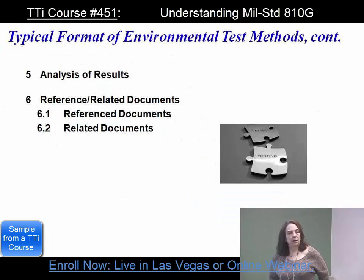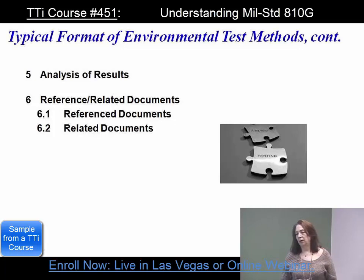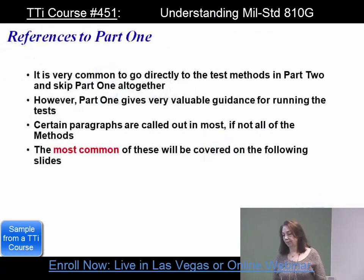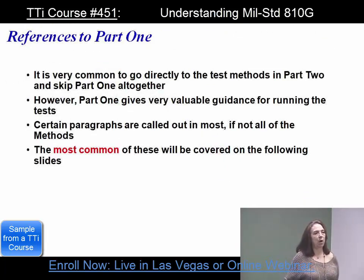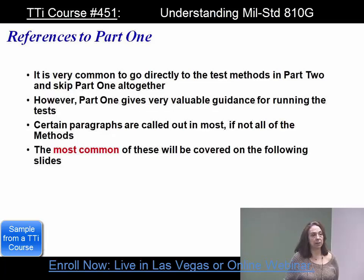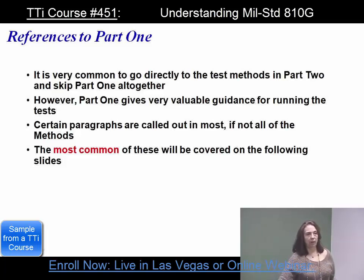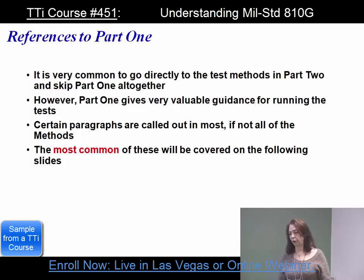Section five is analysis of results, which is a little different for each method, and then the reference and related documents. A lot of people just don't like to read part one — it's a lot of pages — but that's still not a good excuse. That's where we get the tailoring advice and our tolerances. When the methods refer back to part one, it's good to actually go back and read those paragraphs. I'm going to highlight the ones referred to most often.